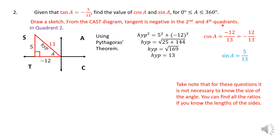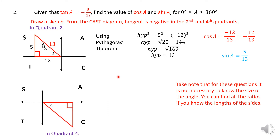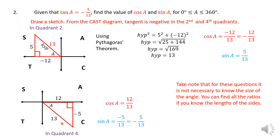The solution also lies in the fourth quadrant, because tangent is also negative there. Bringing in the triangle for the fourth quadrant: the opposite side is negative 5, because y values are negative as you go down, and the adjacent is positive 12. The hypotenuse is still 13. So cos a in the fourth quadrant is 12 over 13, and sine a is negative 5 over 13, making the whole ratio negative. Surely the sine ratio is negative in the fourth quadrant.